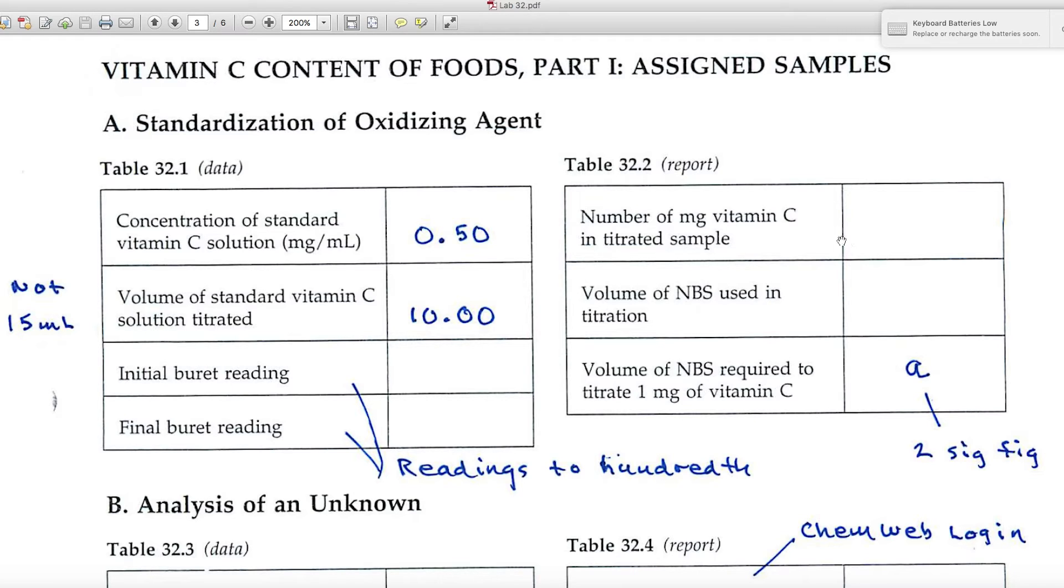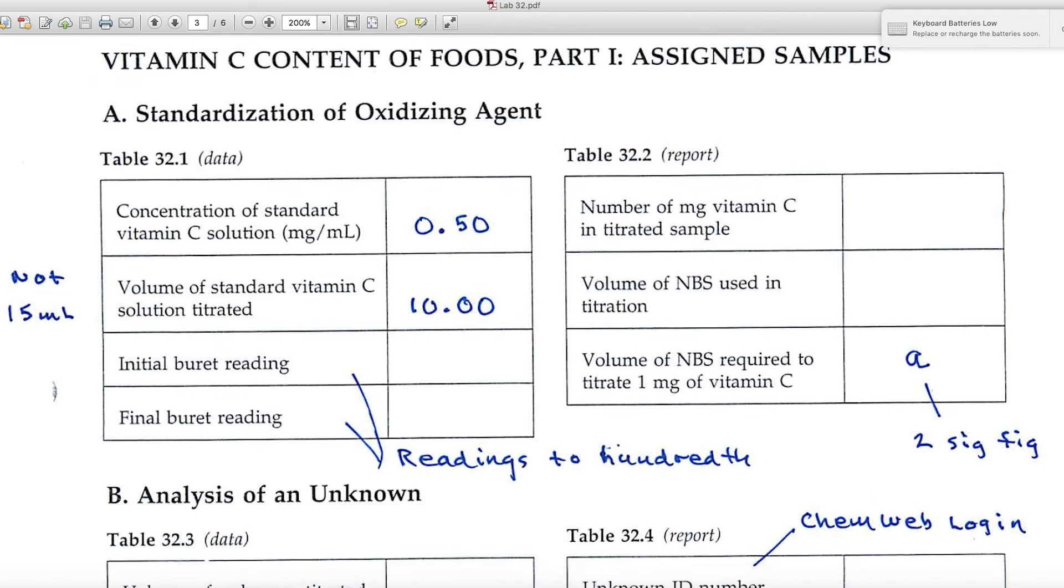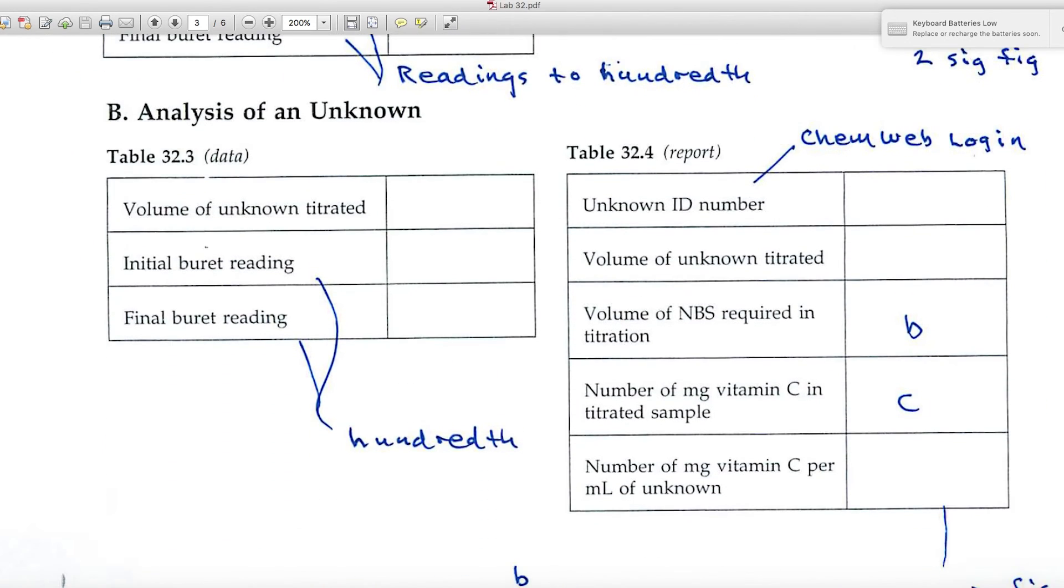Now the first couple blanks I don't think will present any problem for you. Number of milligrams of vitamin C in titrated sample: you'd multiply the volume times the concentration, keep track of the units, and that would give you milligrams. The volume of NBS used in the titration will come from your burette readings. And then this third bit of data I've labeled 'a' because we want to use that value in subsequent parts of the experiment. It should be recorded to two significant figures.